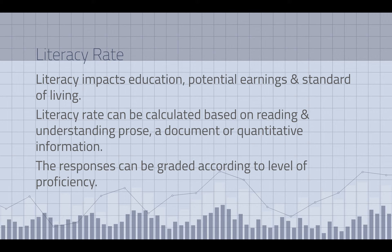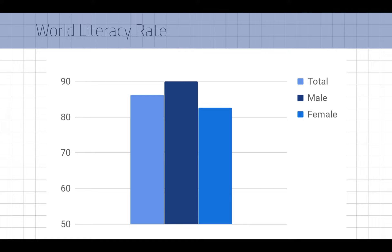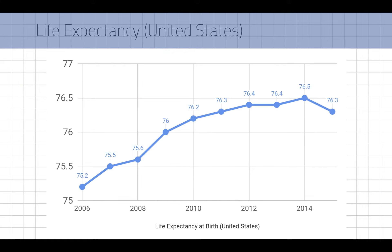Literacy rate is also linked to education because it affects potential earnings, and people who are literate tend to live a little healthier and be more informed. Looking at the total world literacy rate, men overall have a higher literacy rate — that's because women are pulled out of school early in many parts of the world for family responsibilities, while men are sometimes encouraged to study more. And as noted, life expectancy in the US had been on a gradual upward trend but has started to reverse itself in recent years.